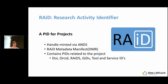RAID, simply put, is a handle. It's minted via ANDS, and attached to it is what we call the DMR — the RAID metadata manifest. The manifest contains other persistent IDs related to the project: DOIs, ORCIDs, other RAIDs, potentially group IDs, tools and service IDs, and any other rich metadata that the service provider, at the point at which the RAID is created, wants to include.